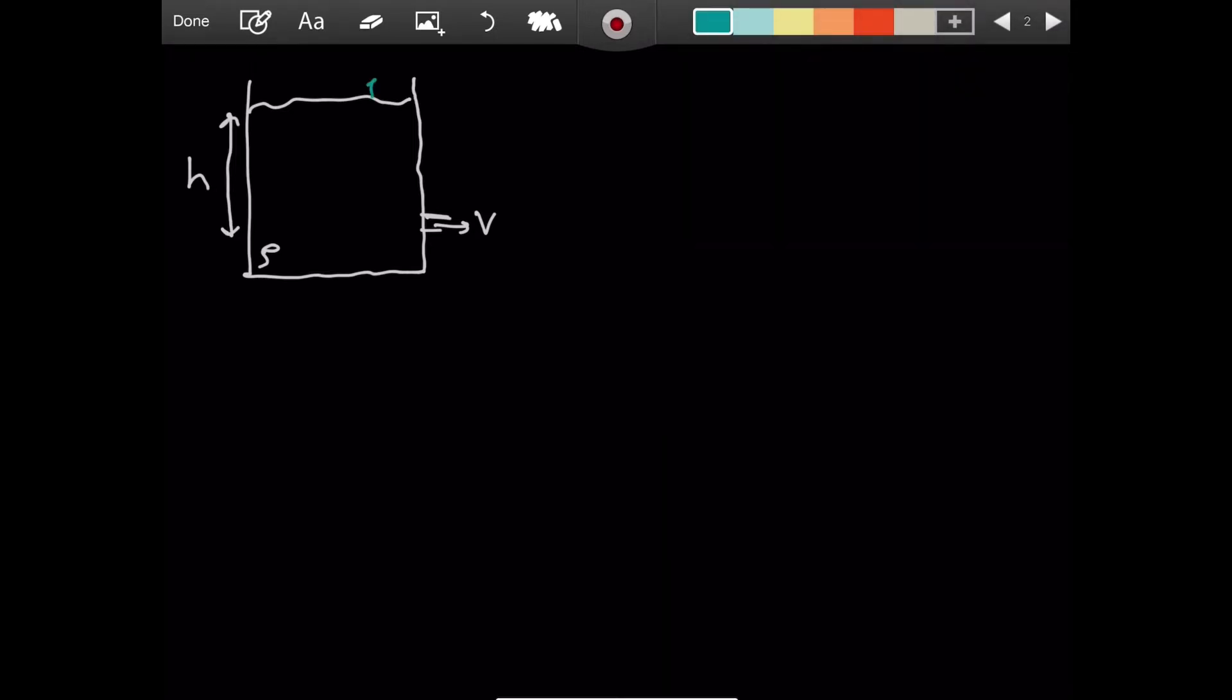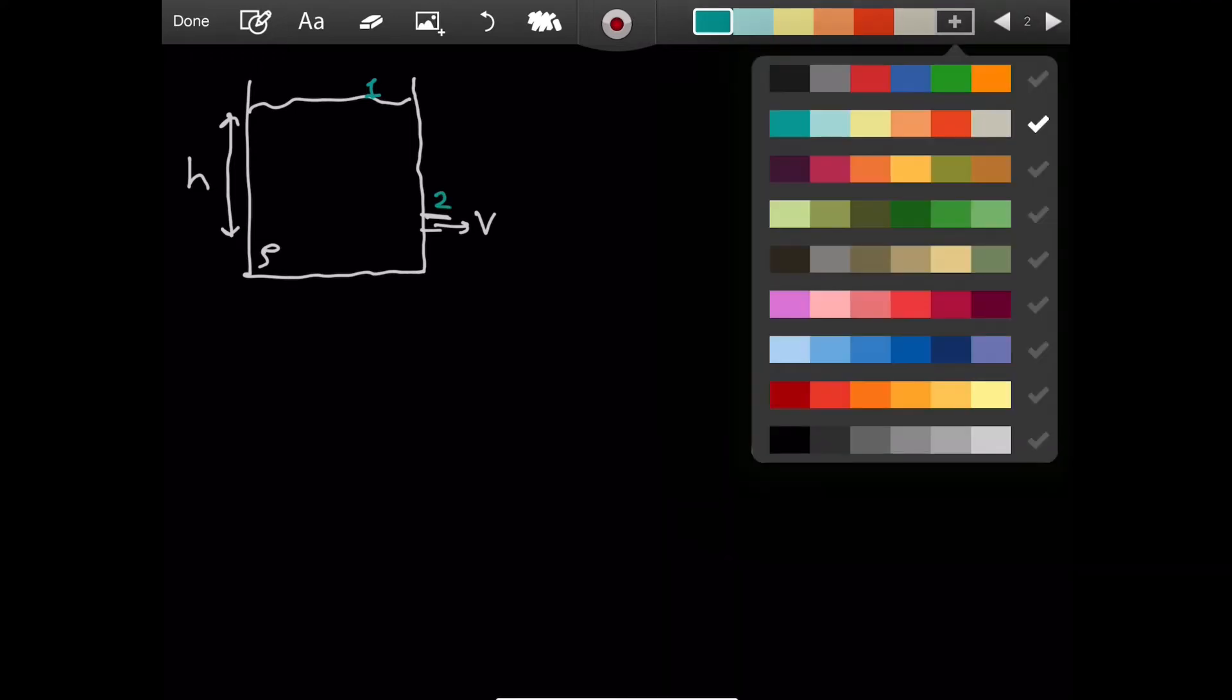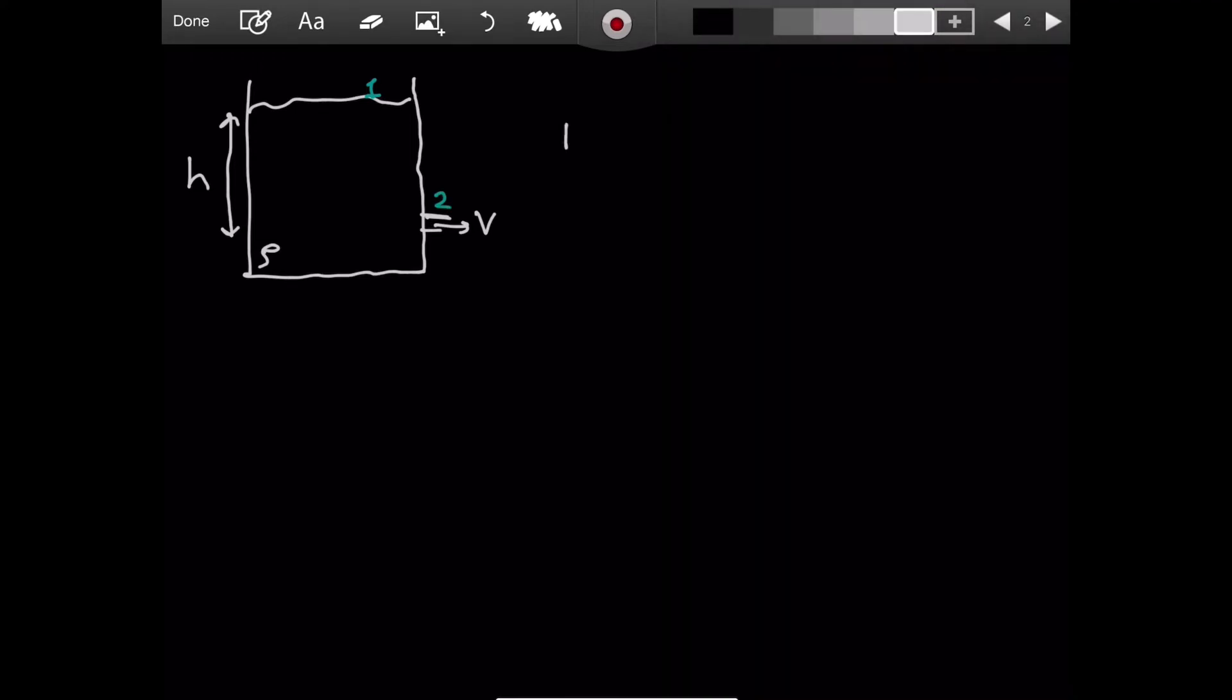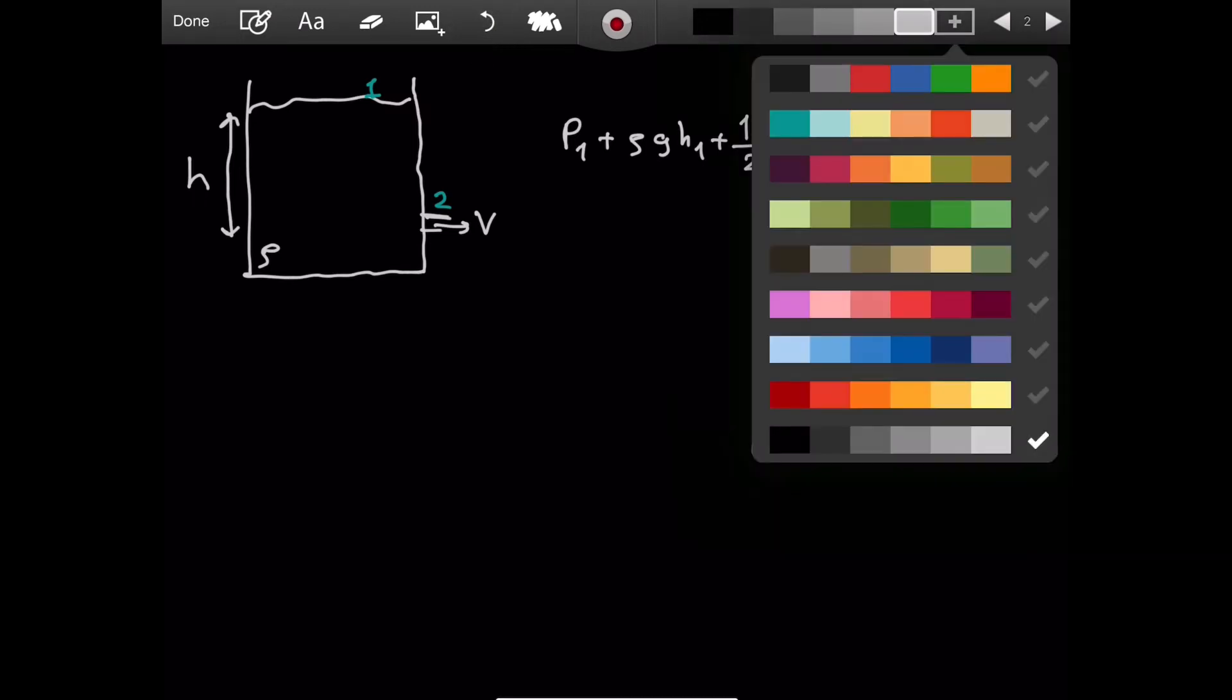if I focus on the top layer 1 and the exit 2, then I can say the pressure at point 1 plus rho g h1, the height value at 1, plus 1 over 2 rho v1 squared, the velocity at 1, is equal to p2 plus rho g h2 plus 1 over 2 rho v2 squared. As I said, this comes from Bernoulli's principle. And g here is nothing but the gravitational field strength, the acceleration due to gravity.